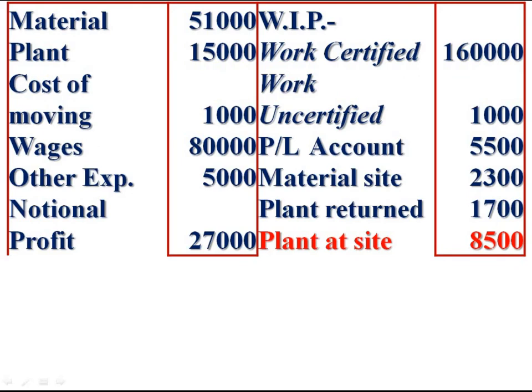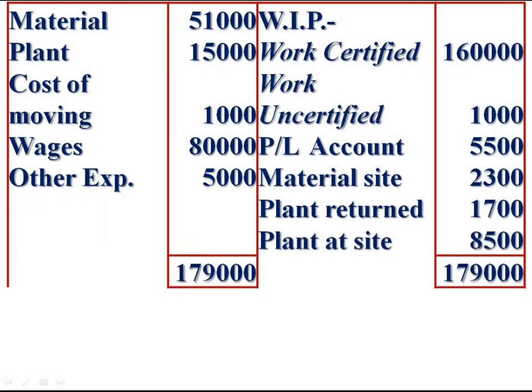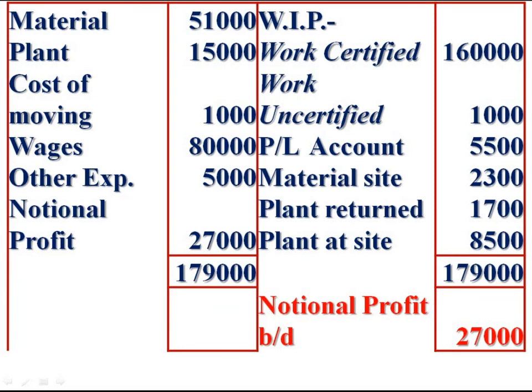After balancing the contract account, we get a notional profit of Rs 27,000. The contract is not yet completed, so this is called notional profit. A part of this notional profit is to be transferred to the profit and loss account as realised profit.